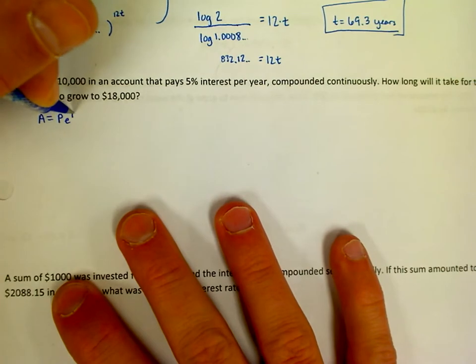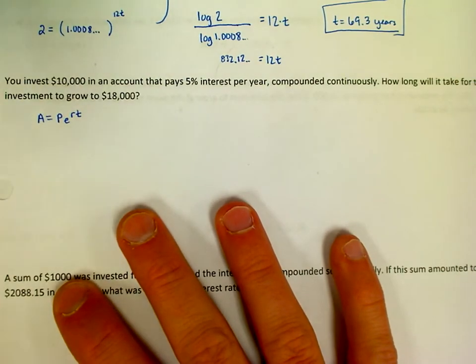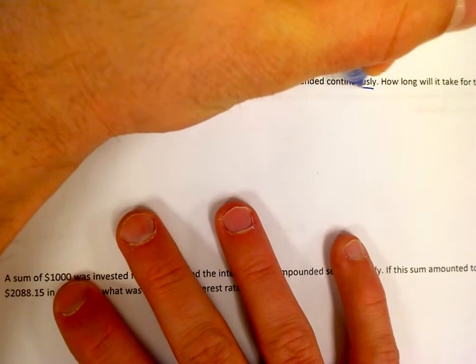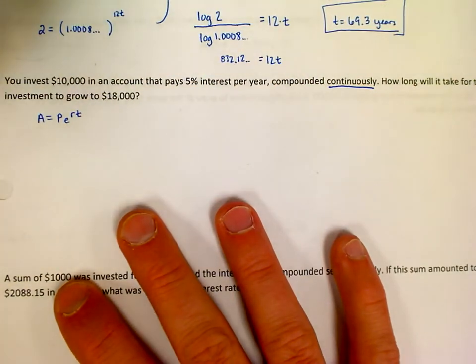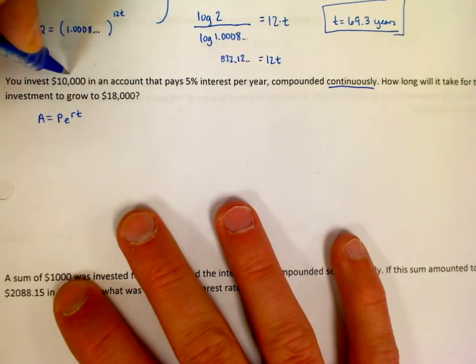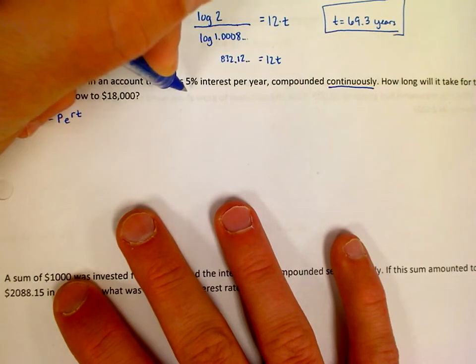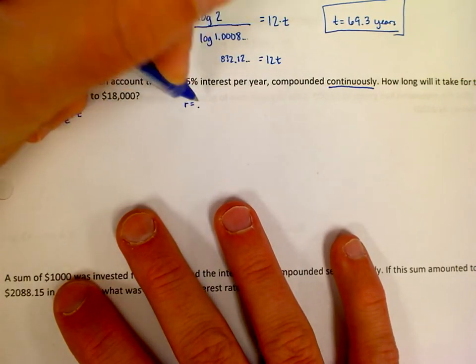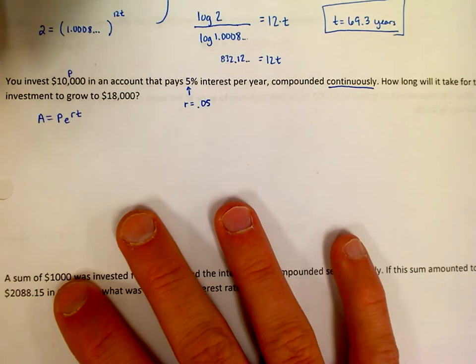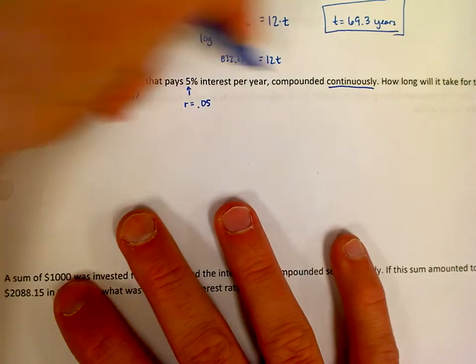So that's the keyword here. You invest $10,000 in an account, that's P. It pays 5% interest, which means our r value is going to be not 5 but 0.05. Very important that we put it in decimal format. If we don't put it in decimal format, we've really screwed things up.